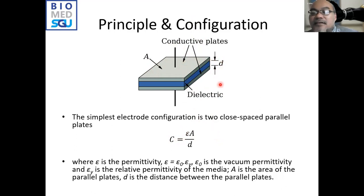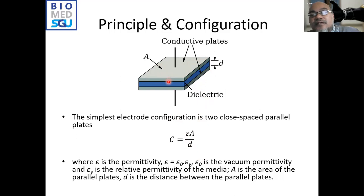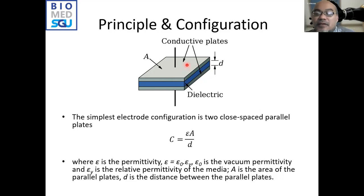The permittivity εᵣ may also change — for example, when the medium between the two plates changes. If the space between two electrodes is a channel for fluid, we can measure fluid flow, provided the fluid has some inhomogeneity in its relative permittivity. Gas sensors and humidity-based sensors can also make use of this dielectric change, which will result in a capacitance change.